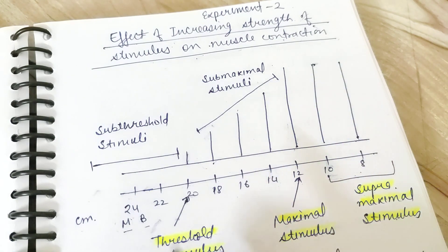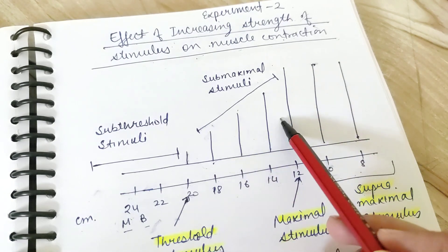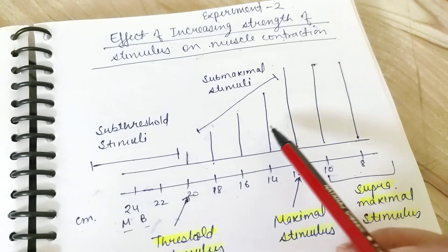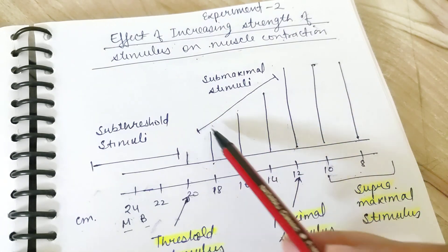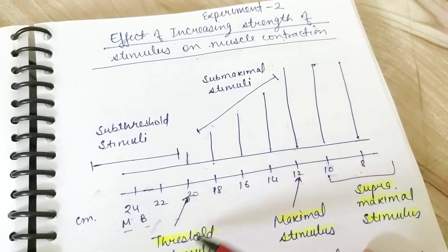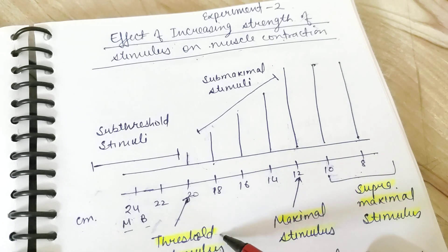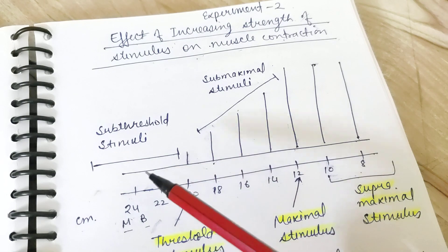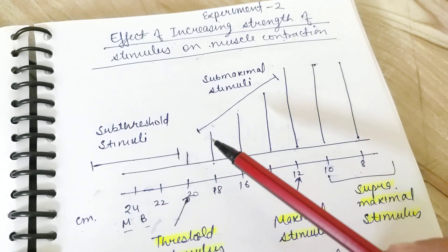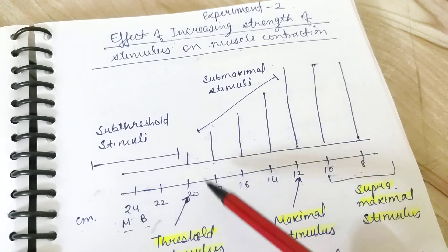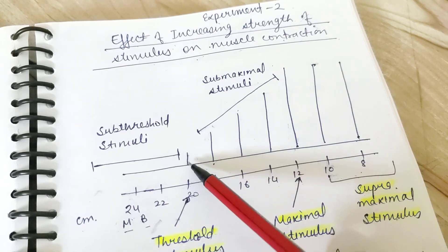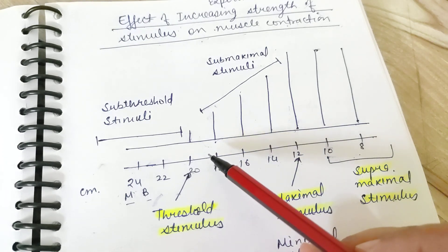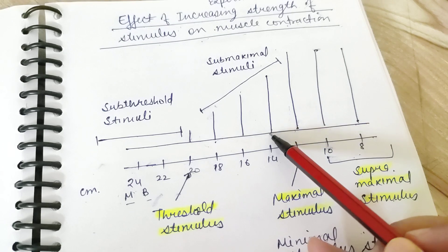The physiology behind it is basically dependent on the number of motor units recruited. A motor unit is one single nerve fiber and all the muscle fibers supplied by that nerve fiber — that constitutes one motor unit. Since we are stimulating a nerve, it may have many motor units. When we start stimulating at the threshold stimulus, only a few motor units are recruited.